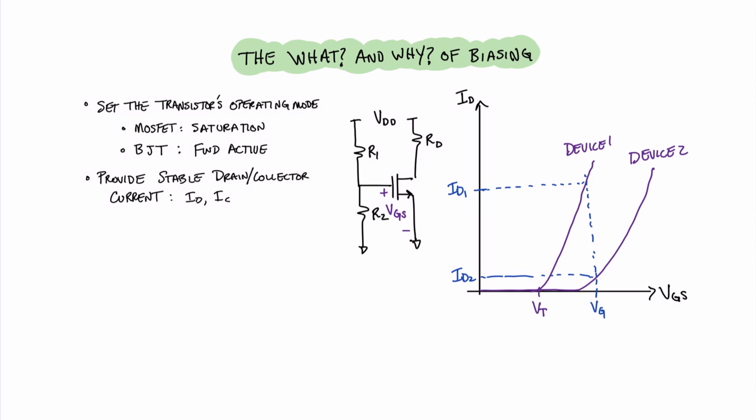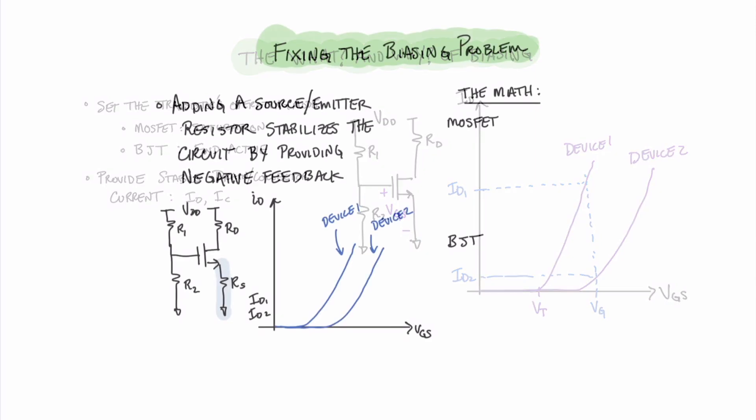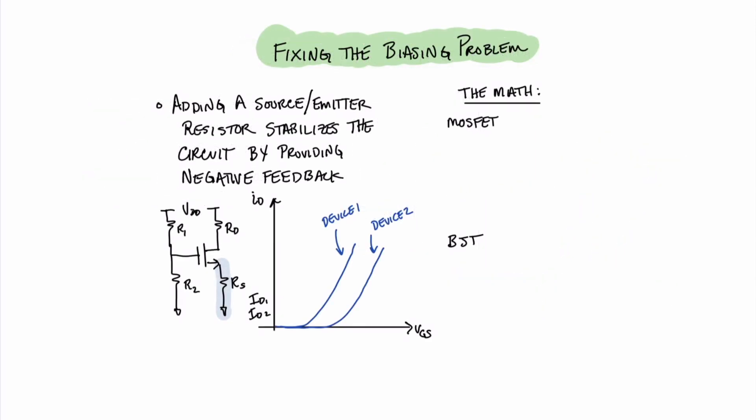The question is, what value do we use for the source resistance and how do we design it? It should be noted that this same problem exists not only with MOSFET circuits, but also with BJT circuits. BJT transistors could vary by their value of beta, in which case we'd get the same result, we'd have two different curves, even if the device is the same model number. So how do we fix this problem? Well, I've already alluded to it.